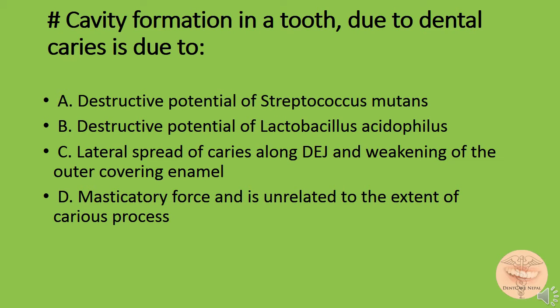Cavity formation in a tooth due to dental caries is due to: option A) destructive potential of Streptococcus mutans, B) destructive potential of Lactobacillus acetophilus, C) lateral spread of caries along the dentino-enamel junction and weakening of outer covering enamel, or D) masticatory force unrelated to the caries process. The correct answer is C: lateral spread of caries along the dentino-enamel junction.